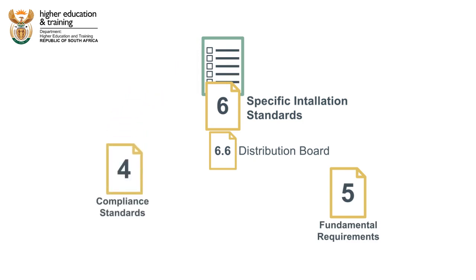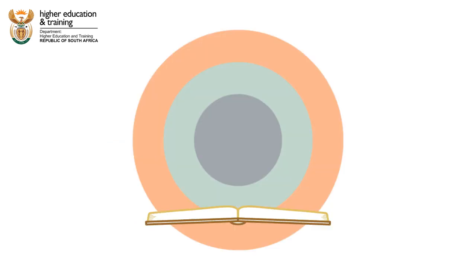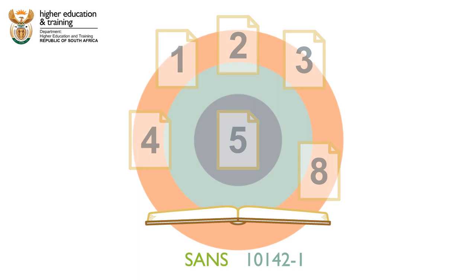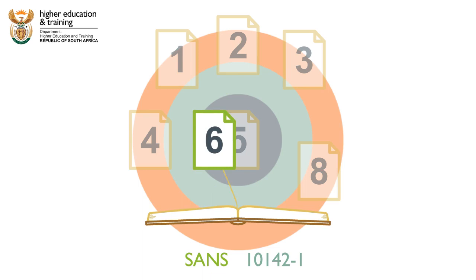You would also need to go through Clause 6.7 – Protection to make sure that the overcurrent, overload and short circuit protection in the board was compliant. From this simple example, we can see that the SANS Code 10142-1 cannot be read like a book from beginning to end. Often, it is a good idea to start with Clause 6 – Installation Requirements or Clause 7 – Special Installations and Locations, and then to read out from there.